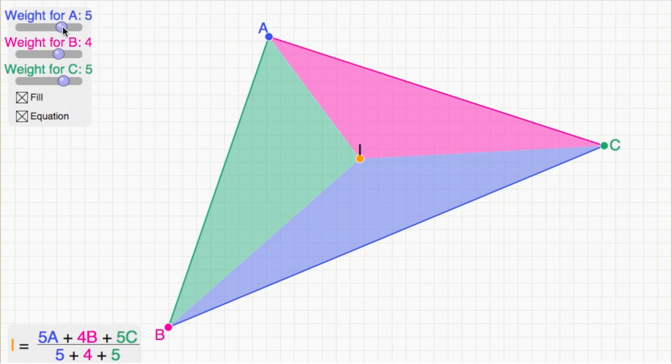Notice that as I change the weights in the average, the intersection point i moves. And if all the weights are positive, i is inside the triangle.